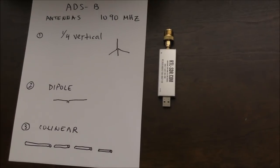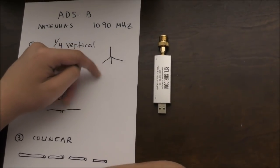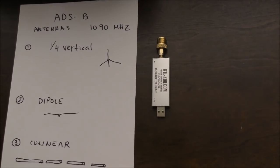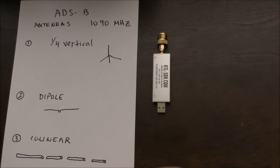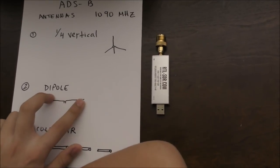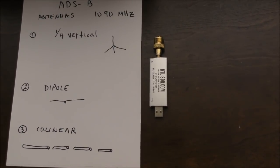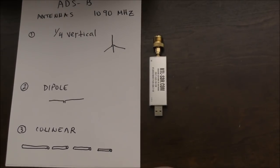The first type is a vertical. The vertical element is a quarter wave with a ground plane. Then the next is a dipole, which is two wires, and they both have the same length, and they can be tuned to pretty much any band. And then a collinear.